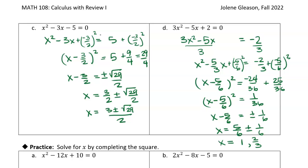Those two values should satisfy the original equation, and you can always check by substituting back in — for example, 3 minus 5 plus 2 should equal 0. Go ahead and work on the practice problems, and I'll meet you for the next video.